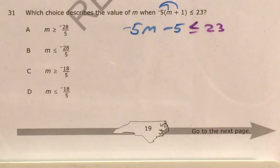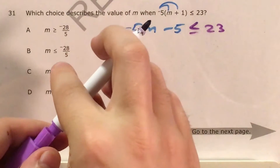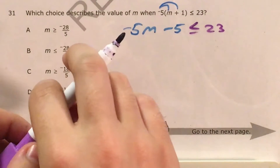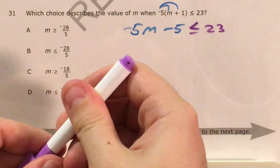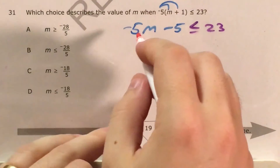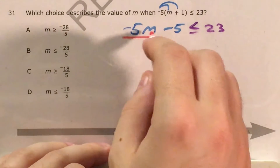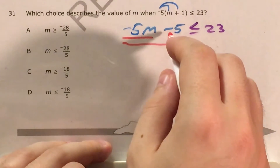At this point we need to go ahead and solve this like it's an equation. There's going to be one wrench — one curveball that this problem throws in near the end, but we'll get there. First thing I want to highlight is that this is a two-step equation, so we'll have to get rid of our negative 5, and then we'll have to get rid of our minus 5.